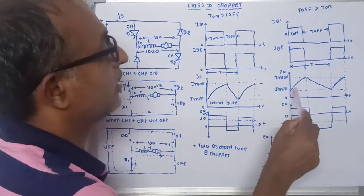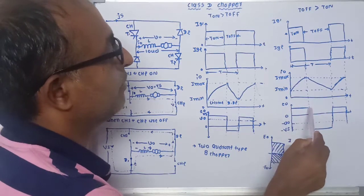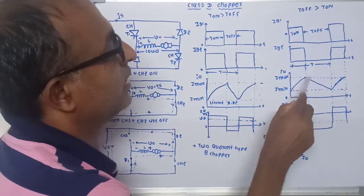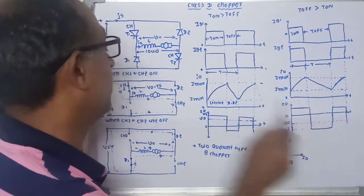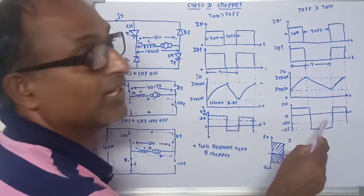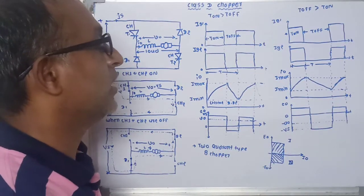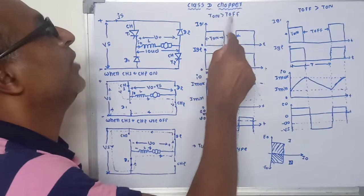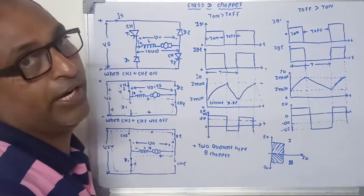When Toff is greater than Ton: while the thyristors are ON, the load current exponentially increases from I-minimum to I-maximum and positive voltage appears across the load. When both are OFF, the current exponentially decreases from I-maximum to I-minimum and reverse voltage appears across the load. The negative portion of the output voltage is greater than the positive portion, so the net average output voltage is negative. Therefore, by changing the values of Ton and Toff, the output voltage can vary from a positive value to a negative value.